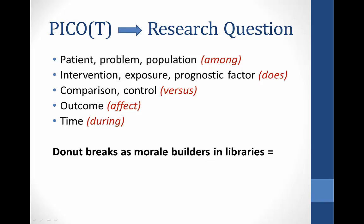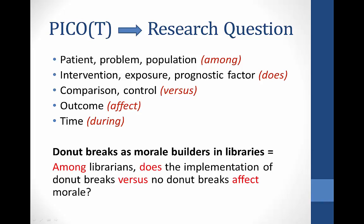Now we are at the third and final step. We've taken our research interest, developed it into a topic, broken that topic into the PICO format, and now we have to write a research question. You can also write a thesis statement, but usually PICO just ends up with research questions. There was some source that added words in parentheses to the PICO format to make research questions easier to write — I find it really helpful. So let's work with our donut break example. Among librarians — our population — does the implementation of donut breaks — our intervention — versus no donut breaks — our control — affect morale — the outcome. You could maybe add "during finals week" if you wanted a time component.